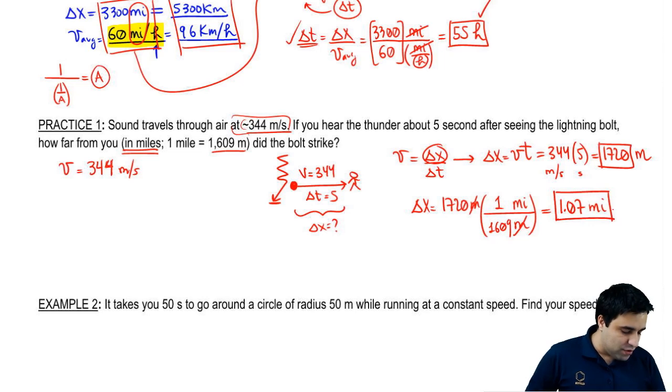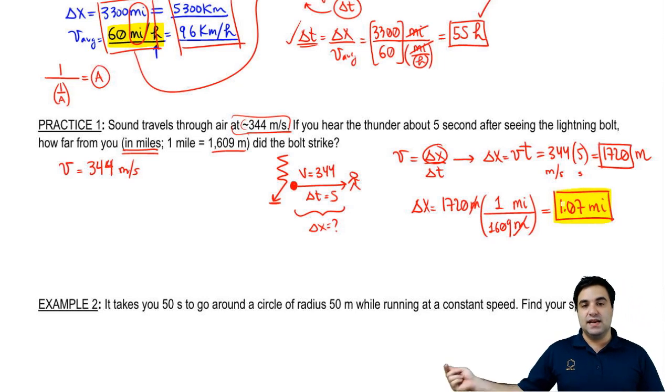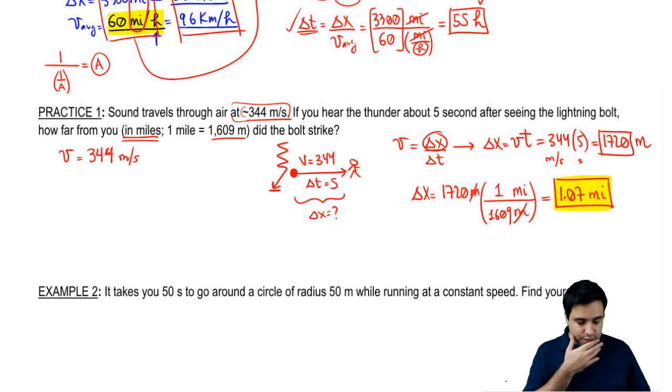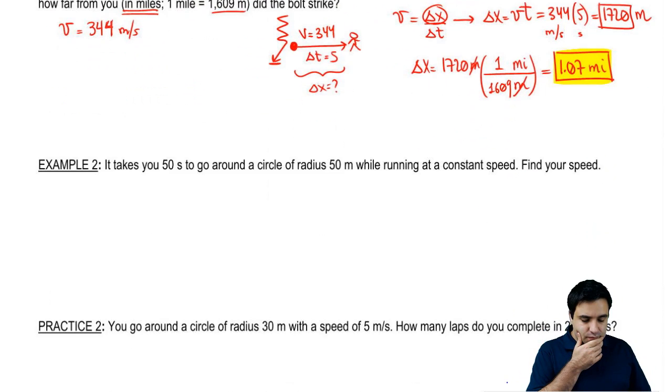That's why you might have heard the rule of thumb that for every five seconds that it takes for you to hear thunder, that's one mile away that the lightning stroke. So if it's 10 seconds, the time that it takes to get to you is 10 seconds, then it was two miles away and so on and so forth.